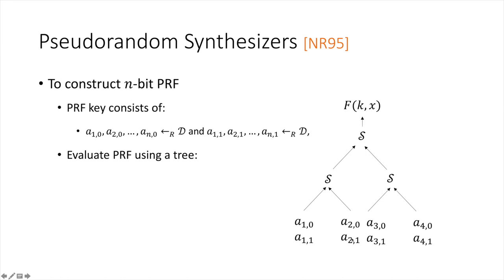To evaluate the PRF on a specific input X, we take either A_{i,0} or A_{i,1} depending on the i-th bit of our input, for each bit position i.